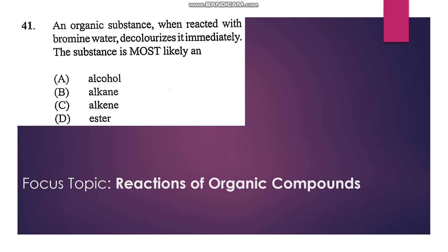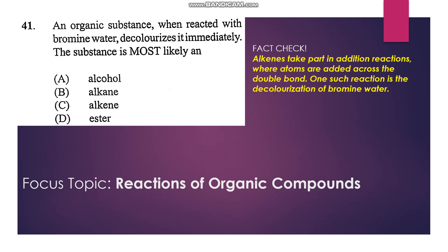41: An organic substance, when reacted with bromine water, decolorizes it immediately. The substance is most likely an—which substance decolorizes bromine water? Alkenes have a double bond which can add halogens. Bromine is a halogen, so there is an addition reaction. Bromine leaves the solution, so the solution becomes colorless. Alkenes—C.